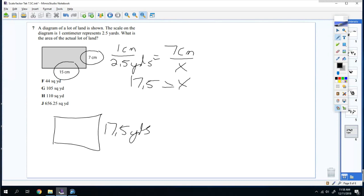So now I got to do 15 centimeters. So we do again, one centimeter over 2.5 yards is equal to 15 centimeters over X. So you cross multiply, 15 times 2.5 is 37.5 yards. And it goes down here.